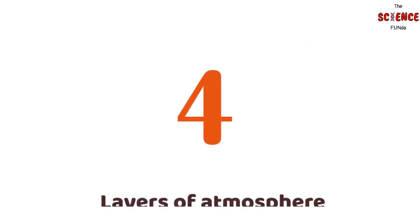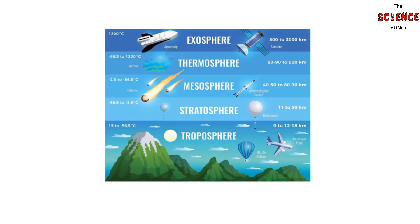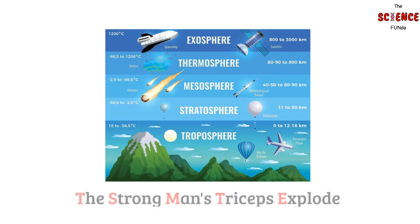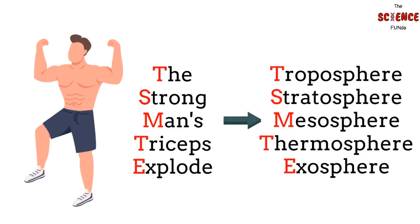Number 4: Layers of Atmosphere. To remember the order of the Earth's atmospheres, we have the mnemonic 'The Strong Man's Triceps Explode.' This mnemonic stands for Troposphere, Stratosphere, Mesosphere, Thermosphere, and Exosphere. Using this, you can remember and recollect the layers of the atmosphere in the correct sequence.